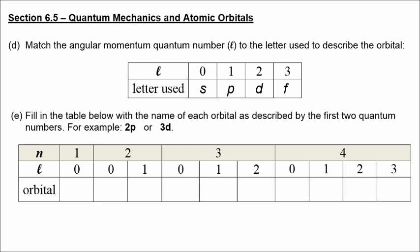When n equals 1 and l equals 0, we have a 1s orbital. When n equals 2 and l equals 0, we have a 2s orbital. When n equals 2 and l equals 1, we have a 2p orbital. There is no such thing as a 1p or a 2d orbital. At level 3 we can have 3s, 3p, or 3d. If n equals 4, we can have 4s, 4p, 4d, or 4f.